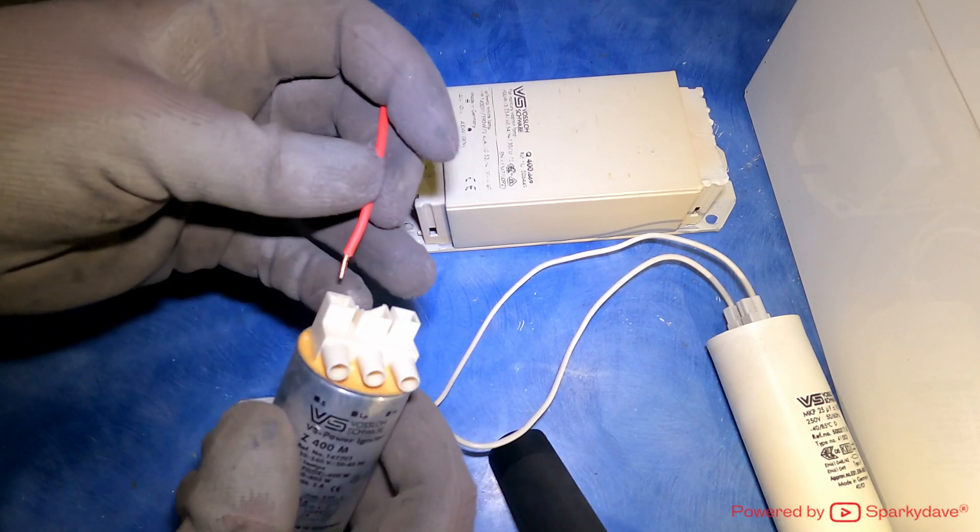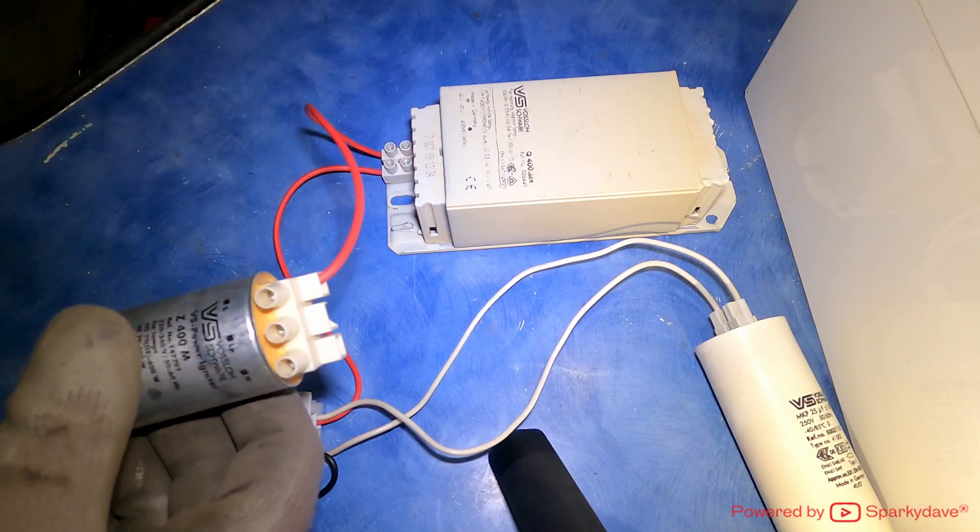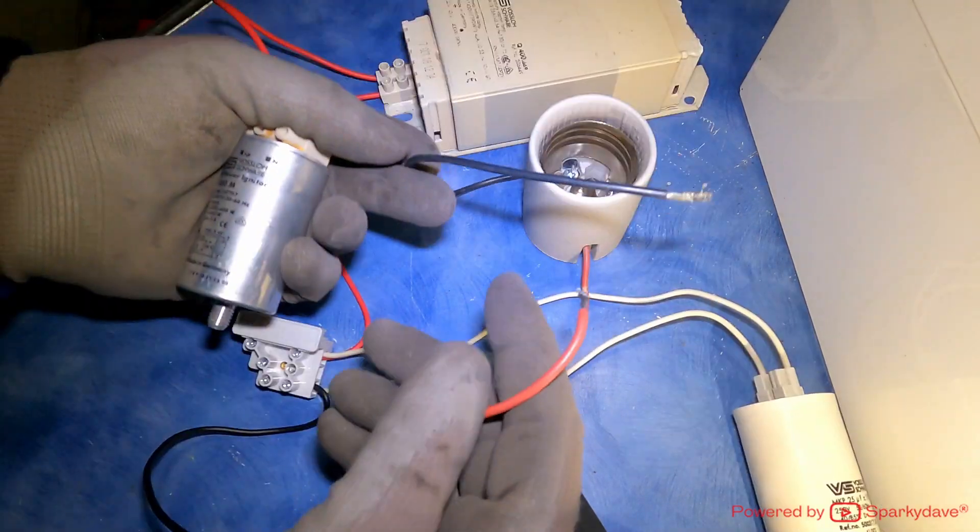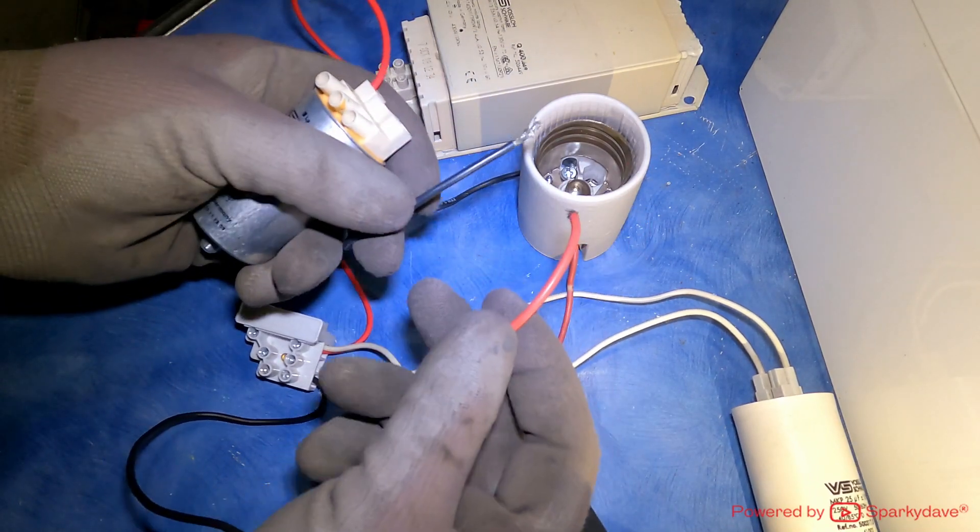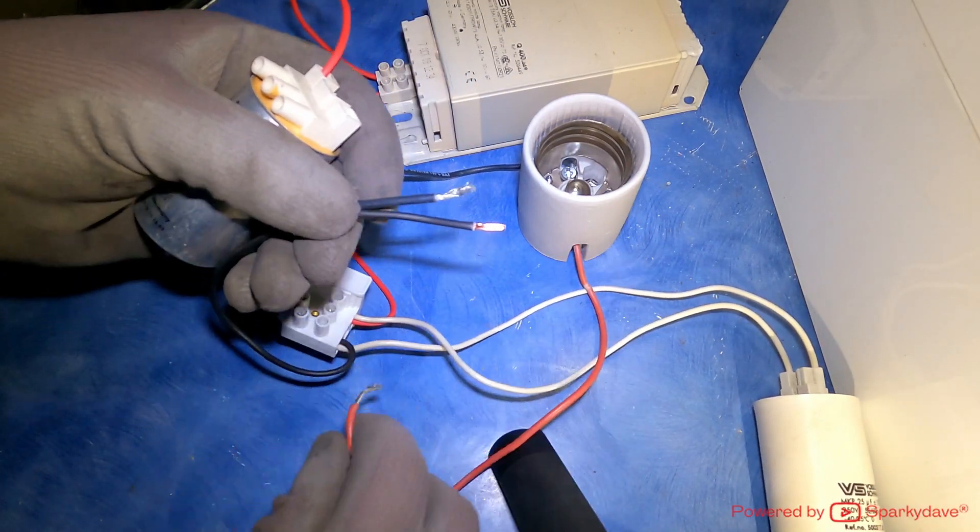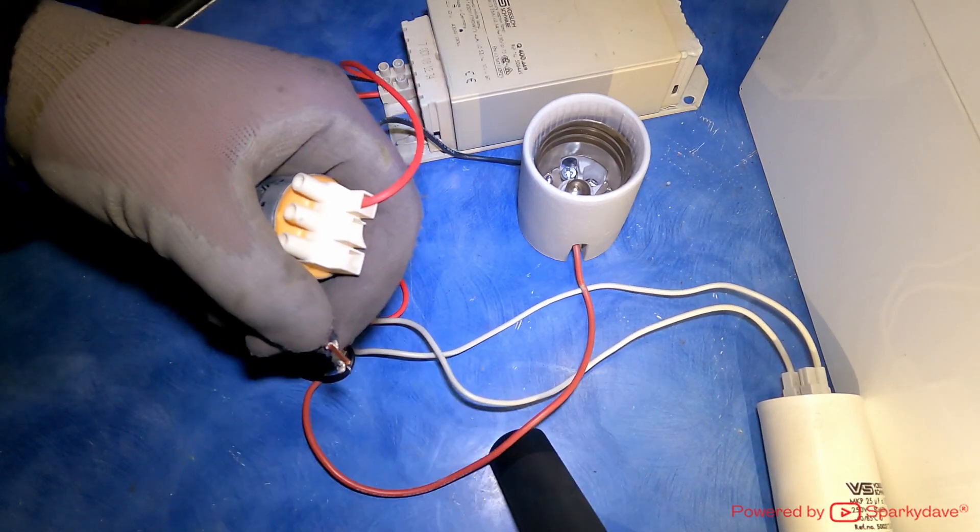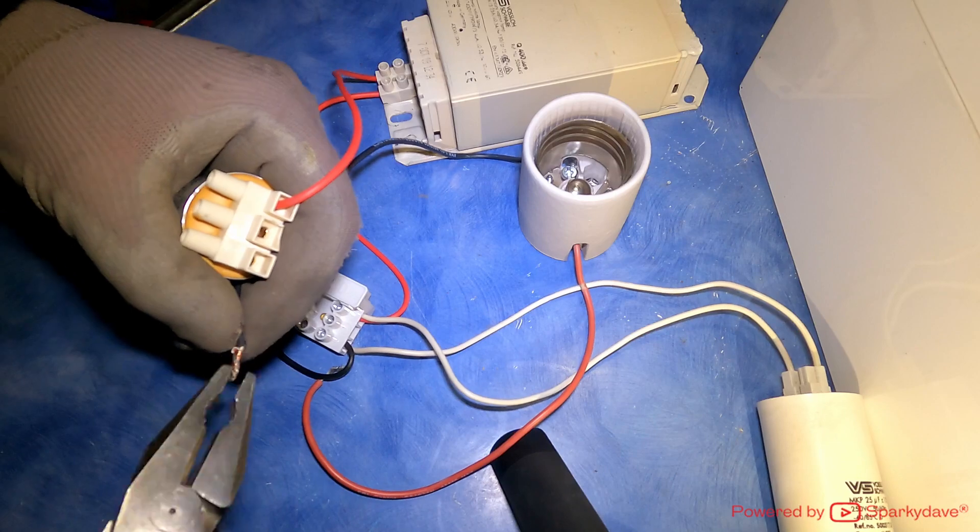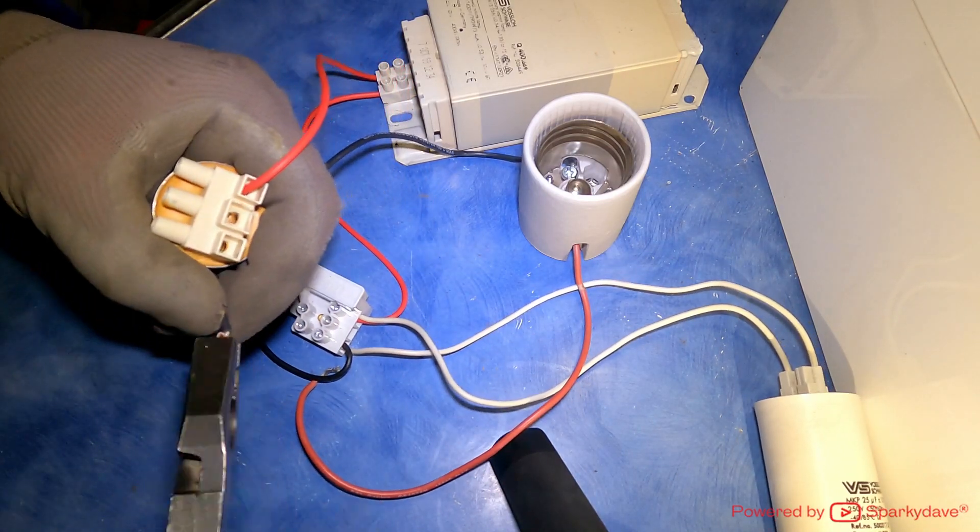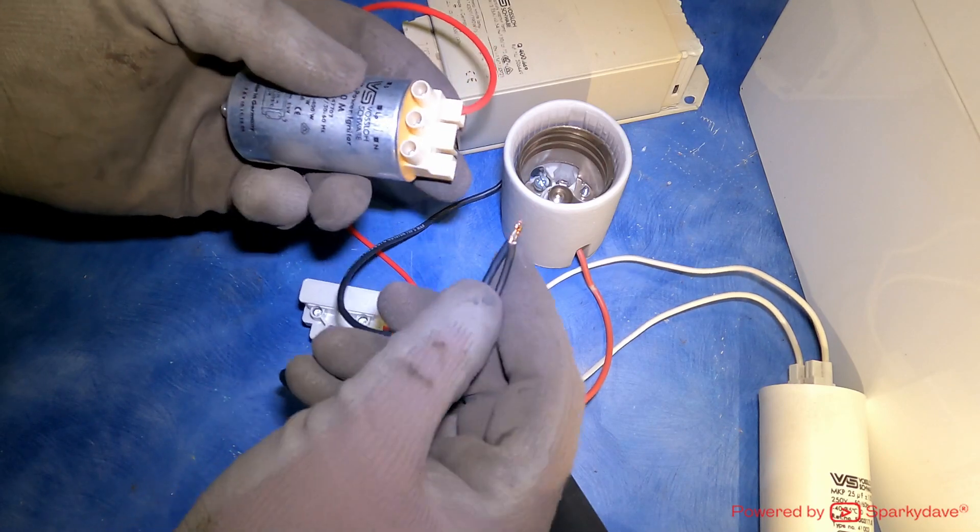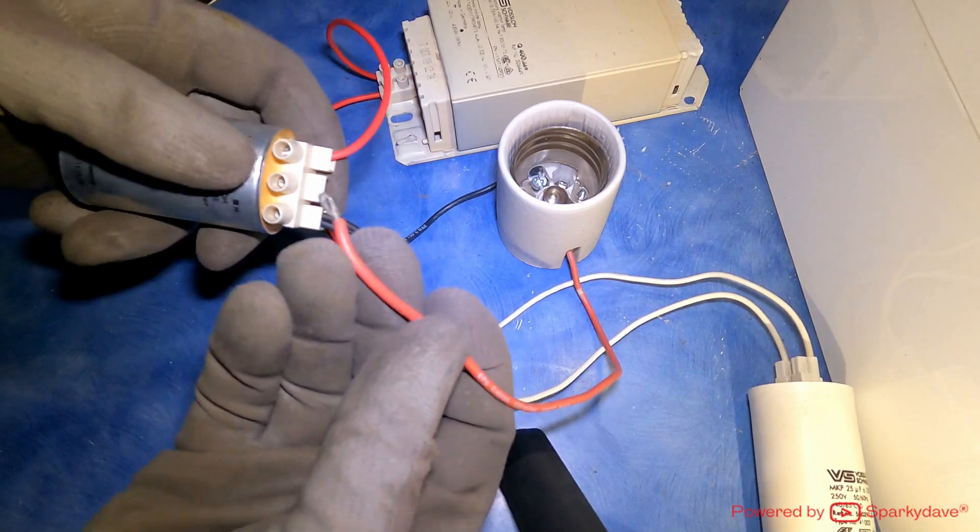Now we'll get the lamp holder and connect that into the circuit. So we've got two cables coming out of the lamp holder, a phase and a neutral. Now the neutral is going to go together with our neutral cable from our connector block, so I'll twist those two together. And so the neutral cables are going to go into the N terminal.